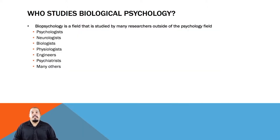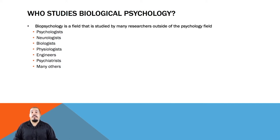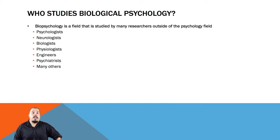Behavioral neuroscience isn't just studied by psychological researchers, but also neurologists and other types of physicians, biologists since neuroscience is a life science, physiologists to understand how the inner workings of the body affect behavior, engineers, and many other fields of science. There are many career opportunities in both university settings and private industry for people with interests in this field.